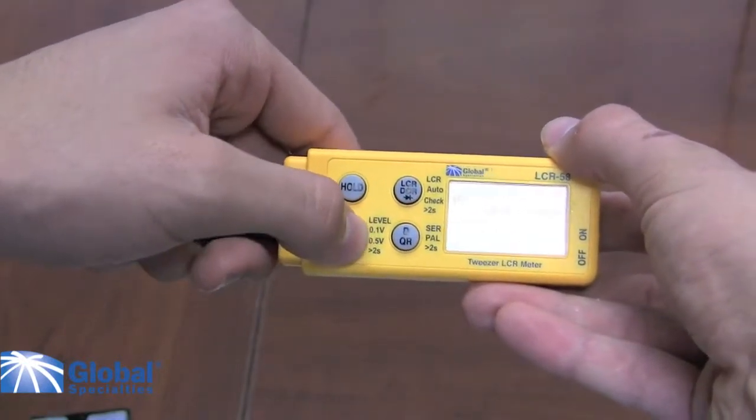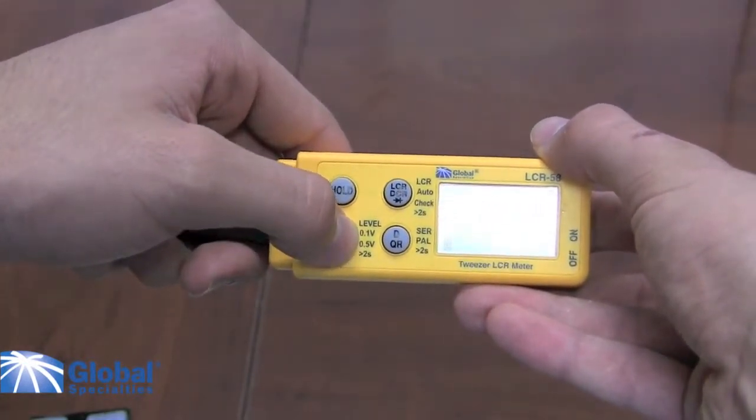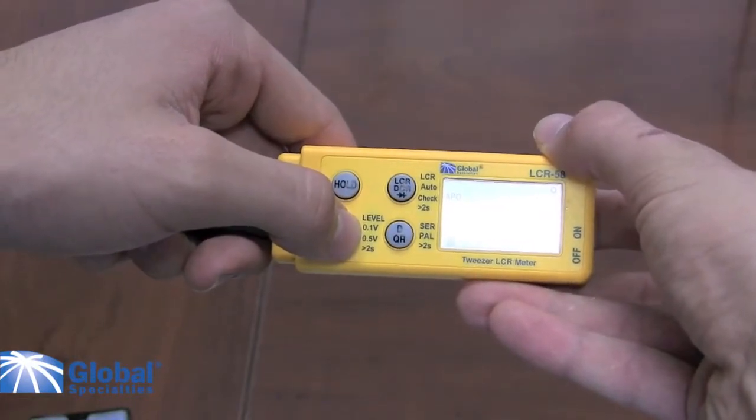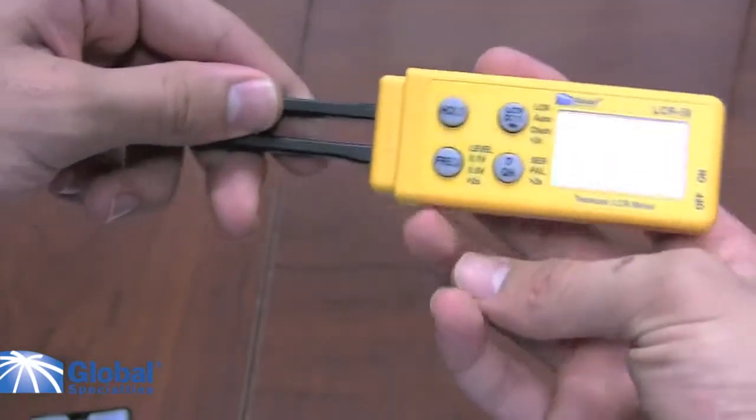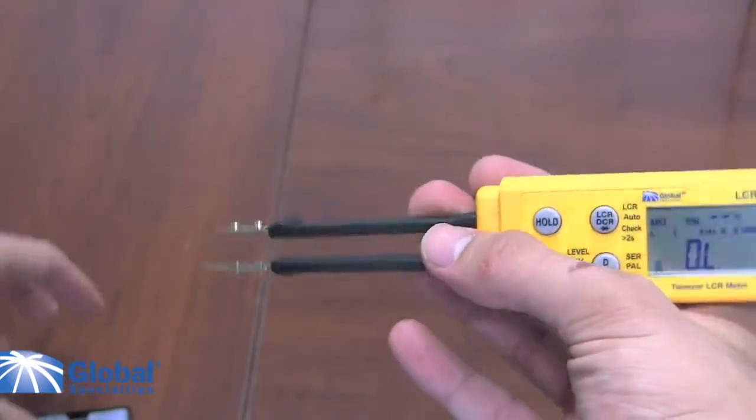Let's try inductance. The first thing we need to do is select a frequency range that we will be measuring in. In this case, in order to get a high precision, we will be using a 1 kHz setting.